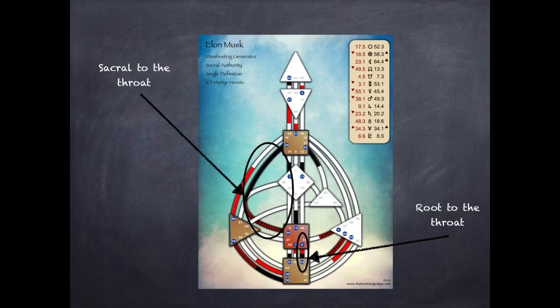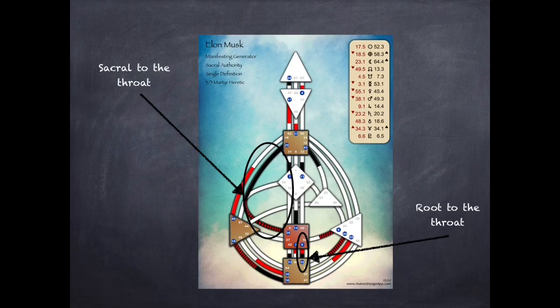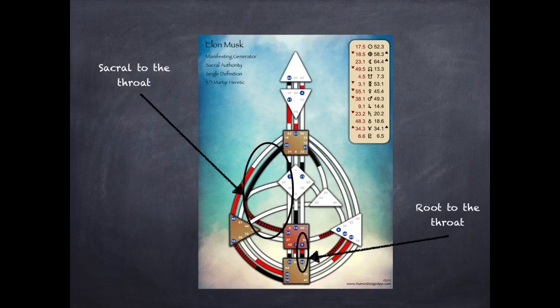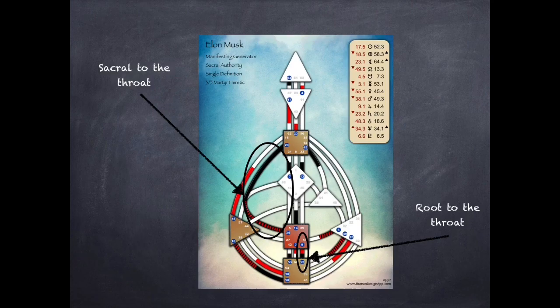So if you look at this chart here, and this is of Elon Musk, he has two motors to the throat. And we know he's quite a powerhouse of energy anyway. And it actually shows in his body graph quite nicely, because he has the most powerful motor in human design directly to the throat. And not only does he have the sacral motor to the throat, but he also has the root motor to the throat. Now the root motor goes up through the sacral, and then it goes right to the throat in that same path. So based on Elon Musk's chart, he has adrenaline energy going to his throat, as well as sacral energy. So he's a powerhouse of manifestation. And I think we can probably see that pretty clearly in the real world.